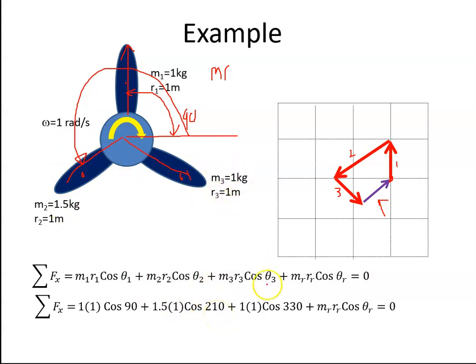M3R3, so it's 1 and 1, and the angle here then is 210 plus 120, which is 330. So it's cos 330, and then we add in our resultant mass, which we don't know what that is yet. So when I add them all up, and I bring the answer to the other side, I get MᵣRᵣ cos θᵣ is equal to 0.433.